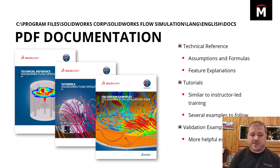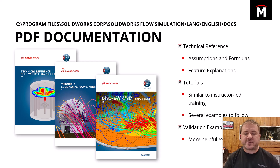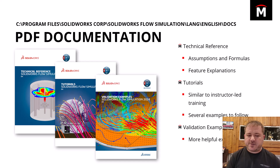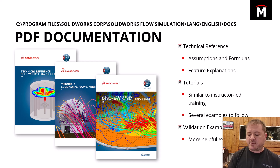There are three of them: the technical reference, tutorials, and validation examples. So if you have Flow — especially if you're a student — and you're trying to figure out how to use it with no reference, maybe you're trying to do a rotating geometry example, go into the tutorials. There's an example in there with rotating geometry that shows you how to set it up. They give you the model, everything you need, and explain it along the way. It's great — it's the next best thing to training.